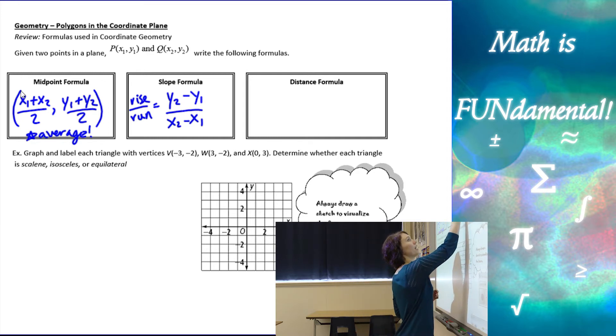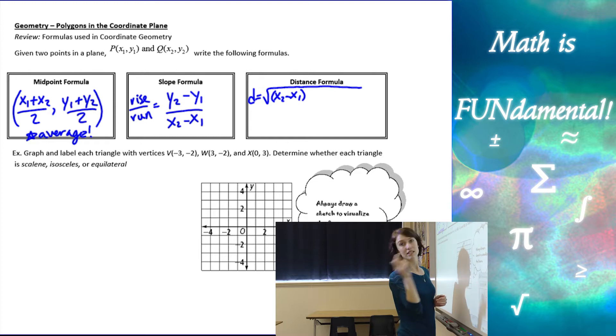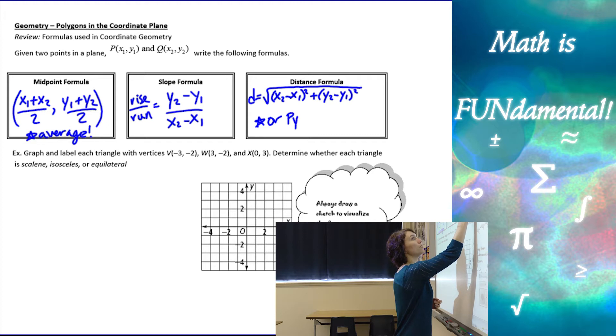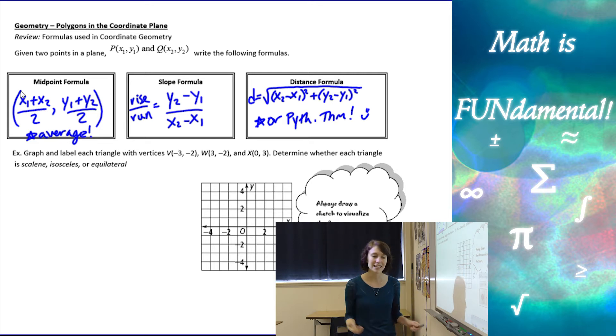And then the distance formula, we have the square root of the difference of our x's, so the distance between the two x's squared, plus the distance between the two y values squared. But remember, you can always use the Pythagorean theorem to find the distances. It's the exact same as the distance formula as long as you make that right triangle from one point to the other.